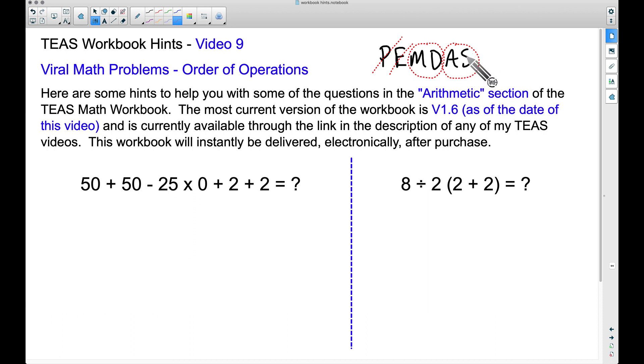For this example down here, we see this multiplication right here. Let's leave the 50 + 50 alone right now. Let's bring down the subtraction: 25 × 0. That's what we want to do first in this problem. Well, 25 × 0 is 0. And now let's bring down the + 2 and the + 2.